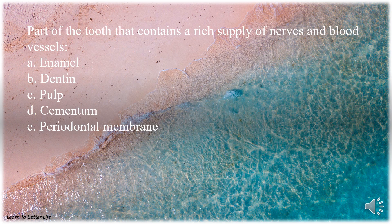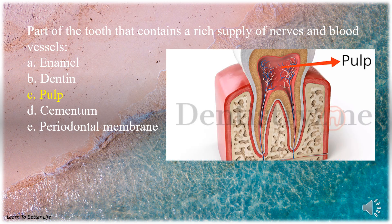Part of the tooth that contains a rich supply of nerves and blood vessels. A. Enamel. B. Dentin. C. Pulp. D. Cementum. E. Periodontal membrane. The answer is C. Pulp.